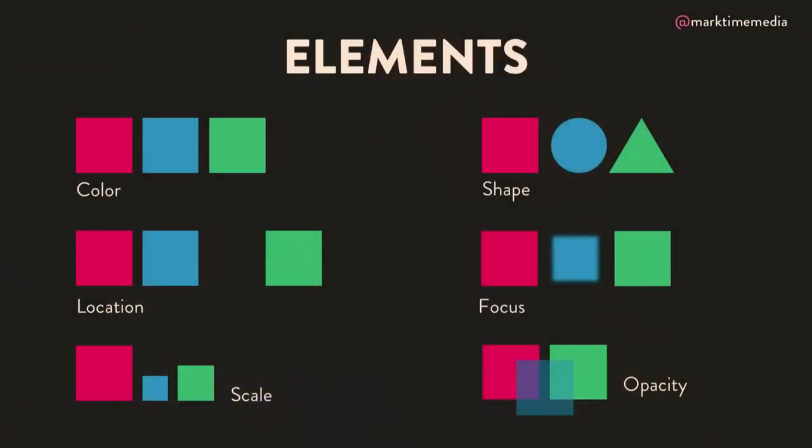Now that we know about animation, what are the actual properties we can animate and in what way? This is your animation vocabulary lesson. For any given object, you could change its color — maybe the border, maybe the fill, maybe the texture, maybe a pattern. You can change its shape, so a square becomes a circle. You can change its location, where it is on the stage. You can change its focus — whether it's right in the forefront and easy to see, or faded into the background, maybe fuzzy. You can change its scale, what size an object is. And you can change its opacity, whether it's transparent or solid, or somewhere in between.